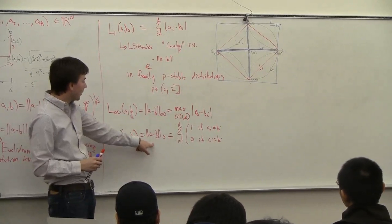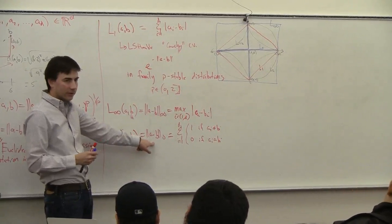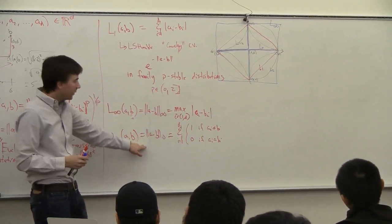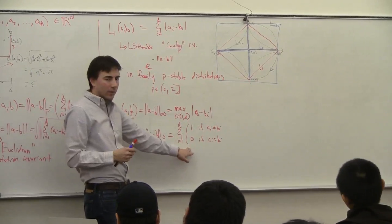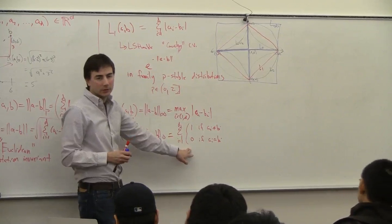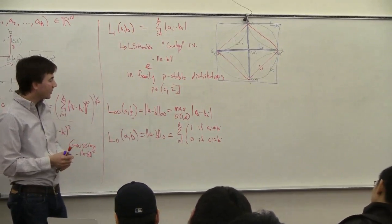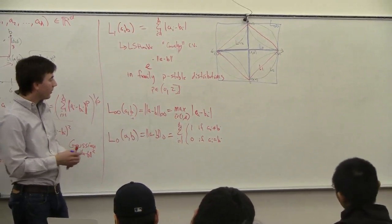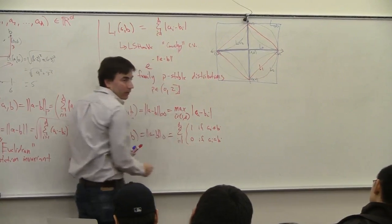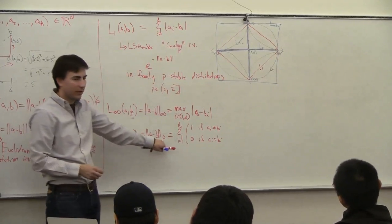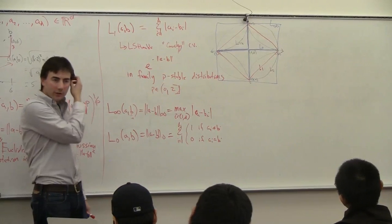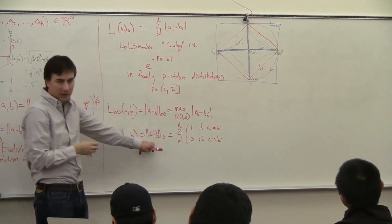For the L0, this should look like what we're using for the minhash. For the minhash we basically wanted to count the fraction of things which were exactly the same, and so you can use something like the minhash to do the L0 distance in certain cases — if it looks like the Jaccard distance, you can do something like the minhash to get the L0.